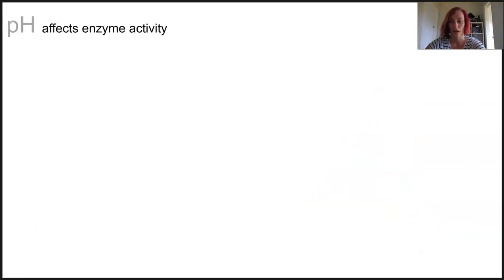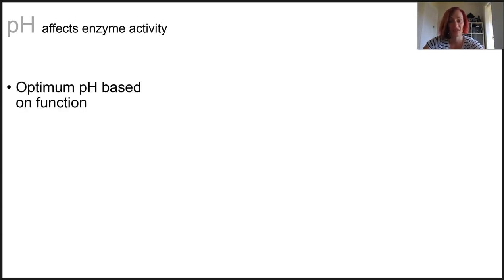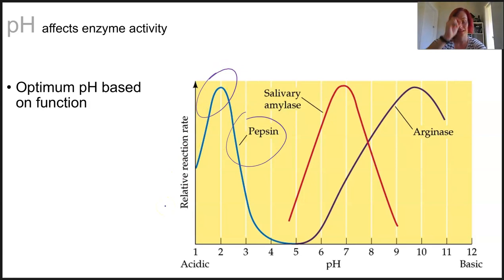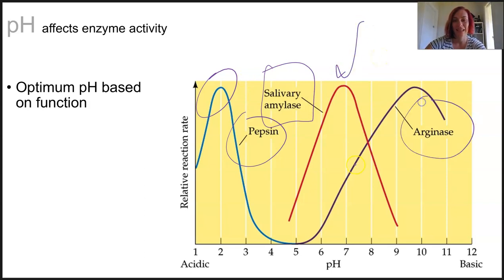pH works in a similar kind of way. Each enzyme will have an optimum pH range based on where it's found in the body and what its function is. For example, digestive enzymes in the stomach need to work at a really low, more acidic pH. Blood enzymes work optimally closer to a neutral pH, so any change away from the optimum is going to decrease activity and lead to denaturing. On this graph, pepsin works ideally at a really low pH because it's acidic and works in the stomach. Salivary amylase works in the saliva at a more neutral pH closer to 7, and arginase is a liver enzyme that works at a higher, more basic pH.